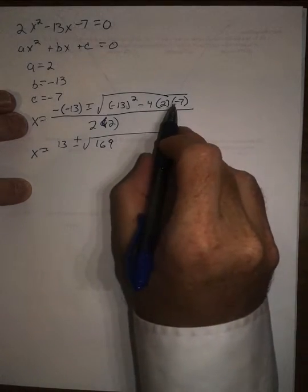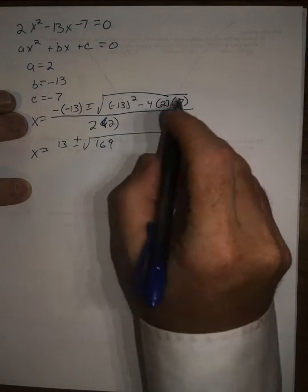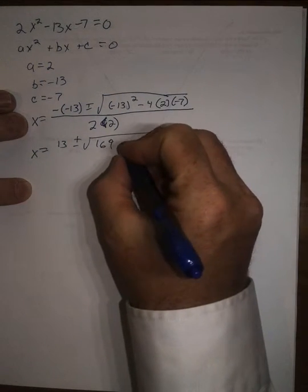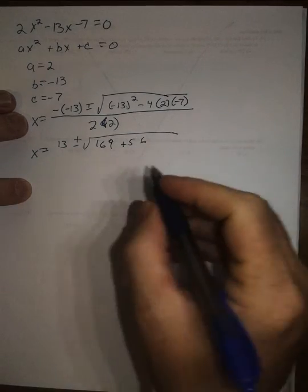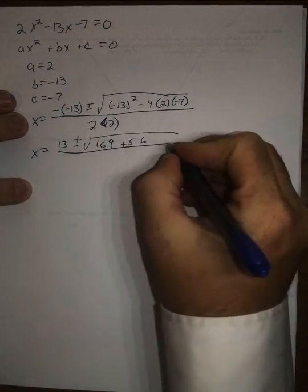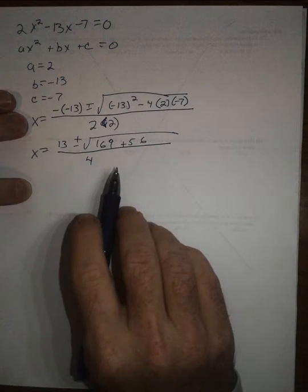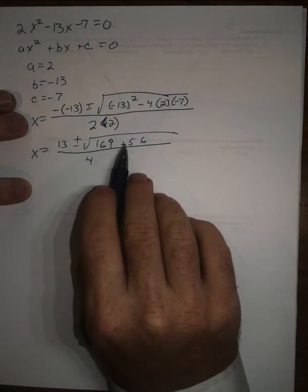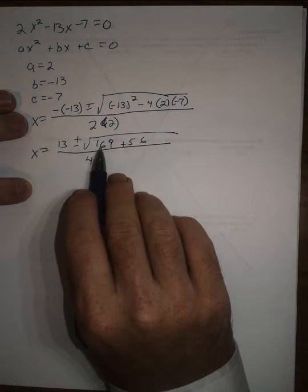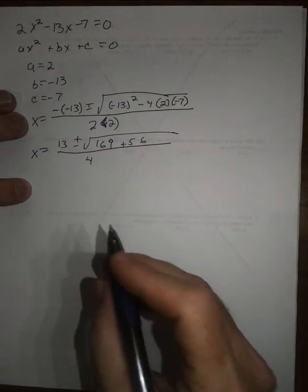Again, negative times negative is positive, so that's going to be 8 times 7 is 56, so plus 56, and then that's going to be all over 4. Now I have to add 169 plus 56 is 225.